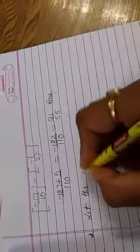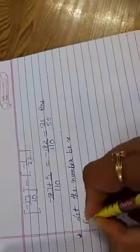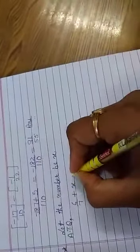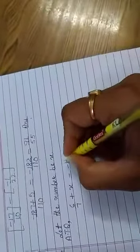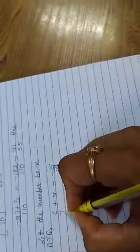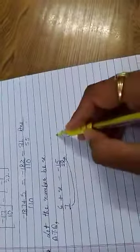Let the number be x. According to question, 6 upon 7 plus that number will be minus 15 upon 28. Here we have 6 upon 7, we will transpose this, this side.